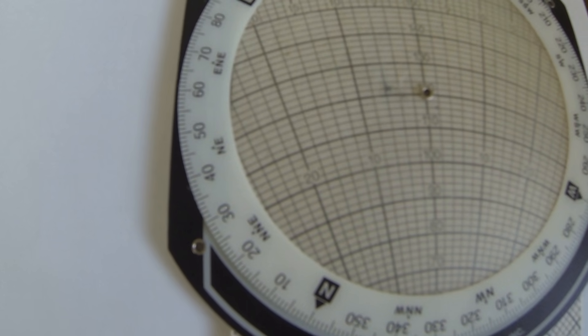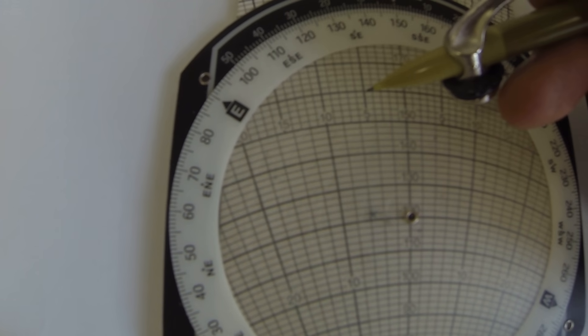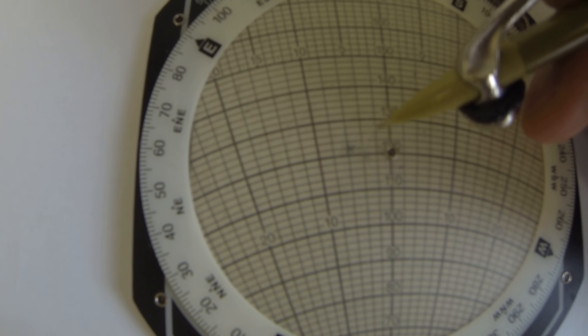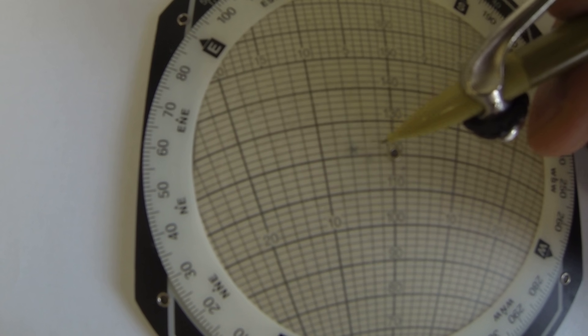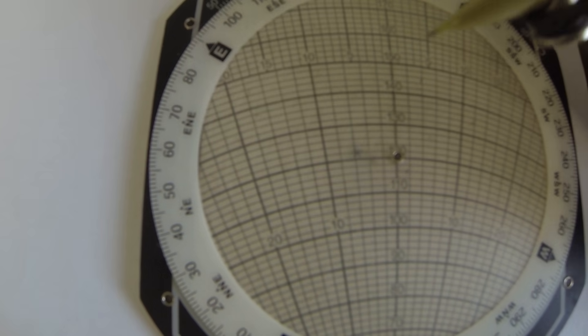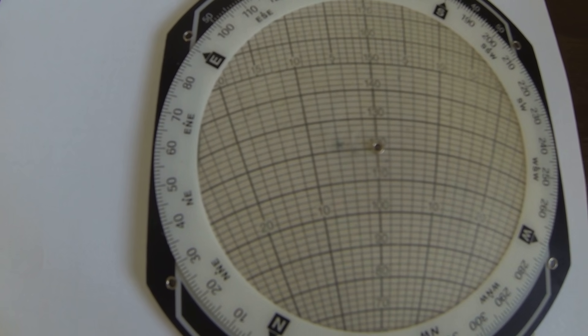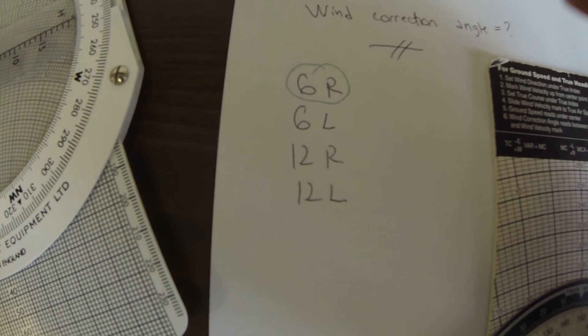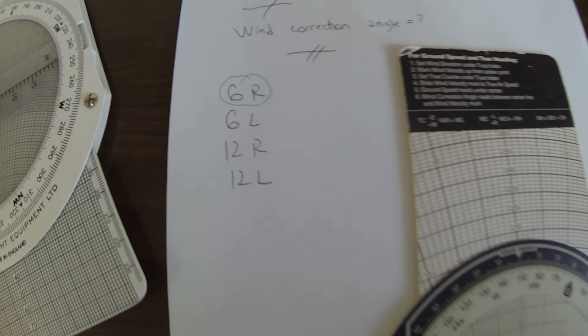And then we read. This is 5, 6. So here every line is 2, so 2, 4, 6. 6 to the left is the drift. So what is the wind correction angle? Opposite to drift, so it's 6 right.